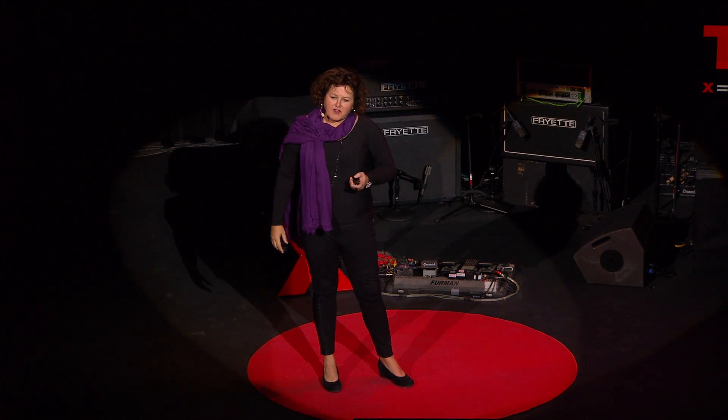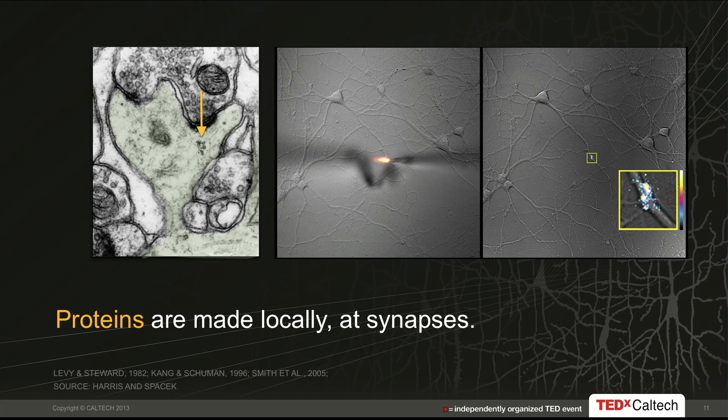Neurons have come up with a very clever solution. They've distributed the goods. Instead of exclusively synthesizing proteins in the cell body, what they've done is to take the protein synthesis machinery — the ribosomes — and send them out close to the synapses. You can see here an image of a dendritic spine, and the little arrow is pointing to a cluster of polyribosomes — protein synthesis machines that are in the active process of making a protein.